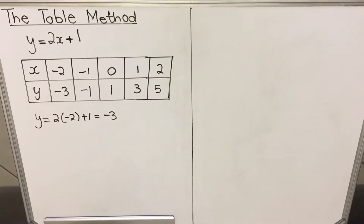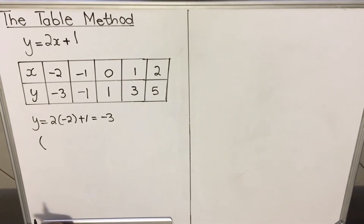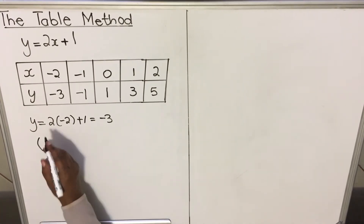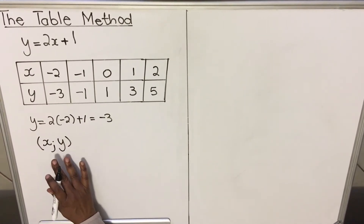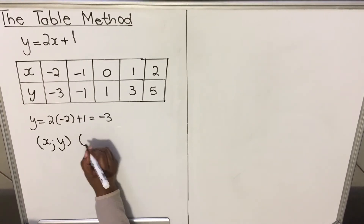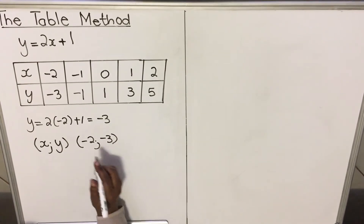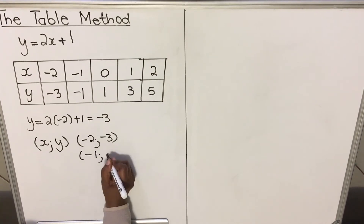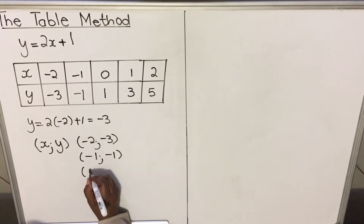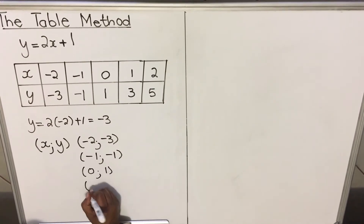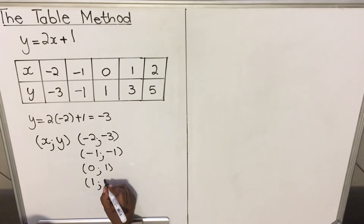Now I'll show you how to write a coordinate. We use a round bracket, and the first value is always x and the second is always y. So the first coordinate is (-2, -3), the next is (-1, -1), then (0, 1), then (1, 3), and the last is (2, 5). We'll use these coordinates to draw our graph.